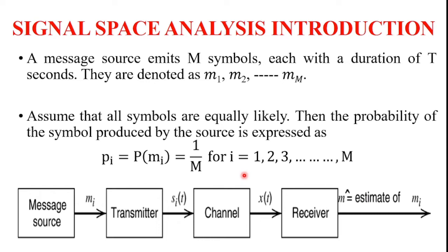The transmitter takes the message source output mi and codes it into a distinct signal si(t), suitable for transmission over the channel. The signal si(t) occupies the full duration capital T allotted to symbol m-suffix-i, where each symbol duration is capital T.